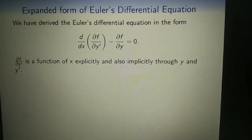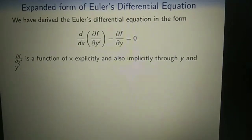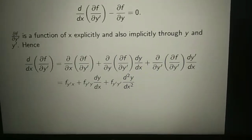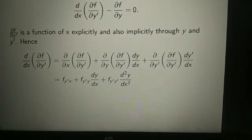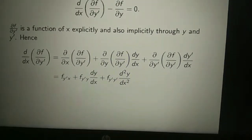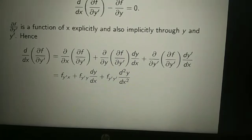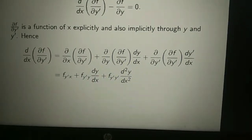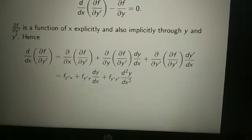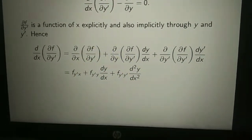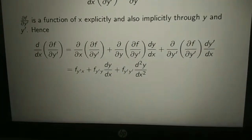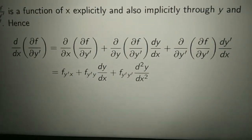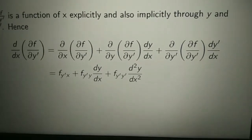∂f/∂y' is a function of x explicitly and also implicitly through y and y'. Hence, d/dx of (∂f/∂y') equals ∂²f/∂x∂y' plus ∂²f/∂y∂y' · dy/dx plus ∂²f/∂y'² · d²y/dx², which equals f_{y'x} plus f_{y'y} · dy/dx plus f_{y'y'} · d²y/dx².